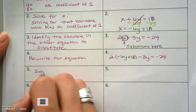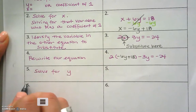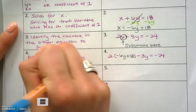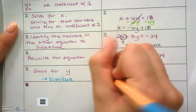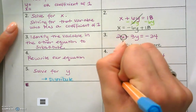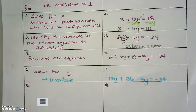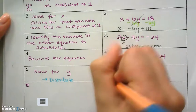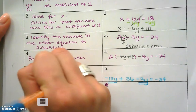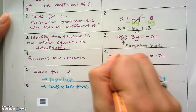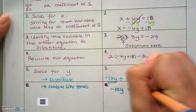Now I have only the same variable in my problem, so I can solve my equation. My next step is to solve for y. To solve for y, our first step should be to distribute. We're going to get negative 12y plus 36 minus 3y equals negative 24. Then I'm allowed to combine like terms, giving me negative 15y plus 36 equals negative 24.